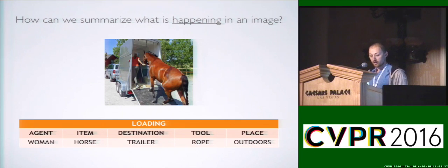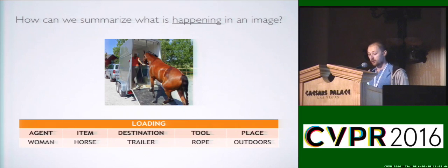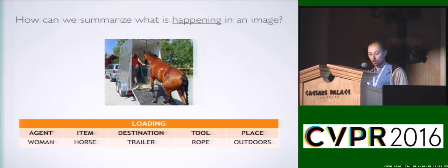We propose a particular method that includes an activity, and loading relevant objects, such as woman, horse, trailer, but crucially roles, which relate how these objects participate in an activity. For example, the horse is actually ending up inside of the trailer.